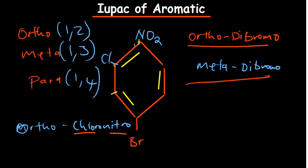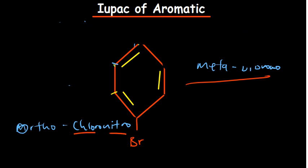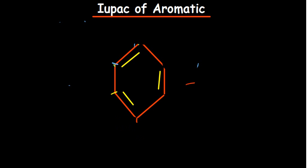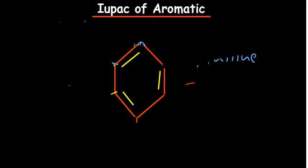Finally, there are a few special benzene structures to note. Aniline is the case where you have an NH2 or amino group attached to benzene. There is also phenol, where you have an alcohol (OH group) attached. These are the basic IUPAC naming rules for aromatic compounds — hopefully you'll be able to remember them when you encounter them in organic chemistry.